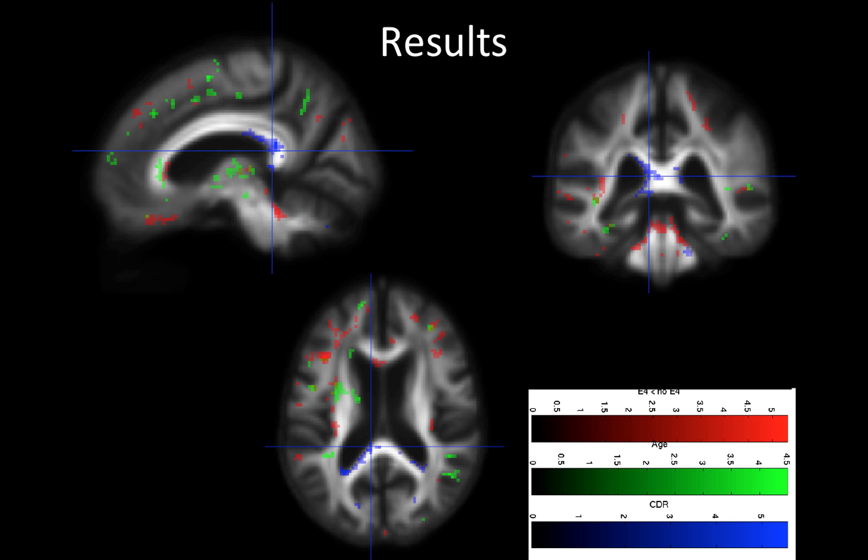So here are the T-score maps for each of these different variables that we have. And we co-vary them together. And these are voxels that are statistically significant, P less than 0.05, but they are not FDR corrected.